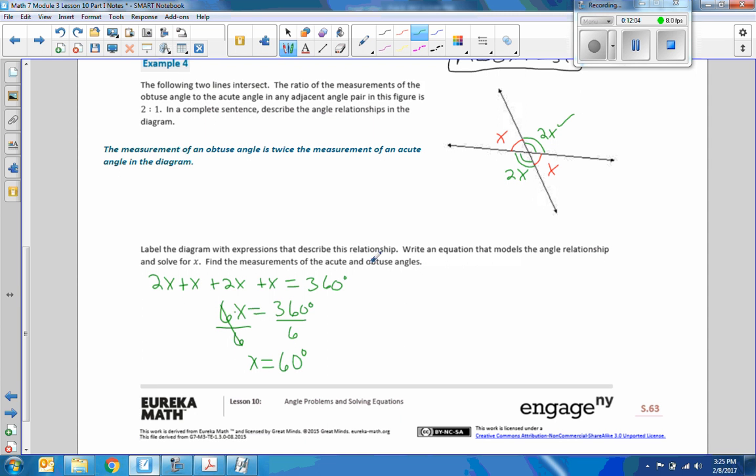Now find the measures of the acute and obtuse angles. So this is 60 degrees. This is 60 degrees. And 2 times that is 120 degrees. So 2 times x, or 2 times 60, I'll just show my work, 2 times 60 equals 120 degrees, and so therefore this is also 120 degrees. And if I add them up, 120 plus 60 is 180. 180 plus 120 is 300. 300 plus 60 is 360. Always check your work, see if it comes out to be true.